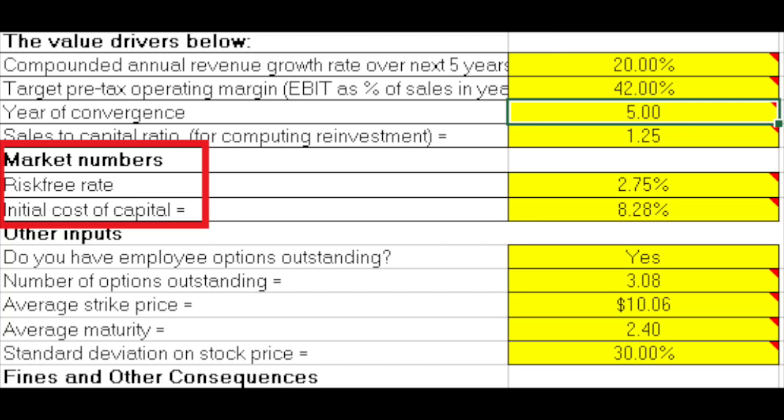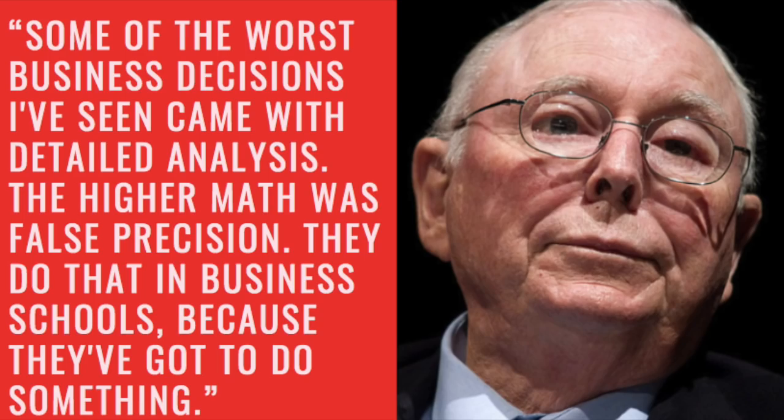We'll discuss more about the initial cost of capital, but let's quote Munger: some of the worst business decisions I've seen came with detailed analysis. The higher math was false precision. They do that in business schools because they've got to do something. So we can listen to Munger or academics.